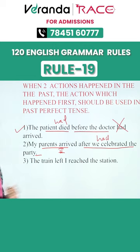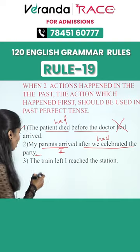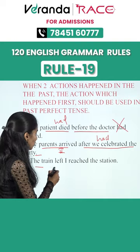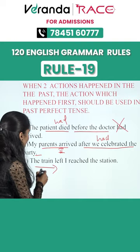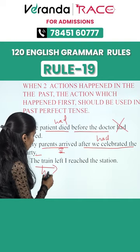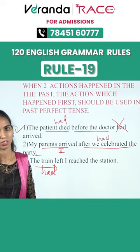The third example is: the train left, I reached the station. The correct form is: the train had left when I reached the station.